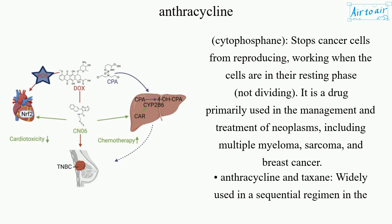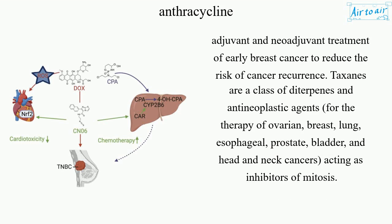Anthracicline and taxane are widely used in a sequential regimen in the adjuvant and neoadjuvant treatment of early breast cancer to reduce the risk of cancer recurrence. Taxanes are a class of diterpenes and antineoplastic agents for the therapy of ovarian, breast, lung, esophageal, prostate, bladder, and head and neck cancers, acting as inhibitors of mitosis.